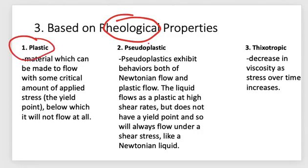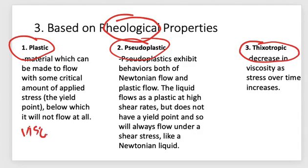We have plastic gels, pseudoplastic gels, and thixotropic gels. For plastic gels, a material can be made to flow with some critical amount of applied stress — the yield point — below which it will not flow at all. Once the stress is no longer applied, it will generally not flow back to its original configuration, meaning plastic gels can be molded. The viscosity of plastic gels decreases at higher shear stress.